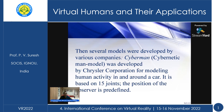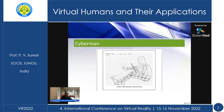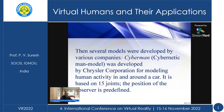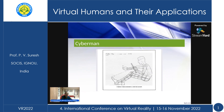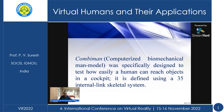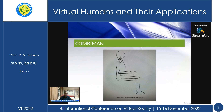Other models were then developed. Cyberman was developed by Chrysler Corporation for modeling human activity in and around a car, based on 15 joints. Combi Man is a computerized biomechanical man model, specifically designed to test how easily a human can reach objects in a cockpit, defined using a 35-joint internal skeletal system. These models have very wide applications. I have given references related to these models — reading about each one will give you ideas for developing a similar model and deploying it in a relevant industry.